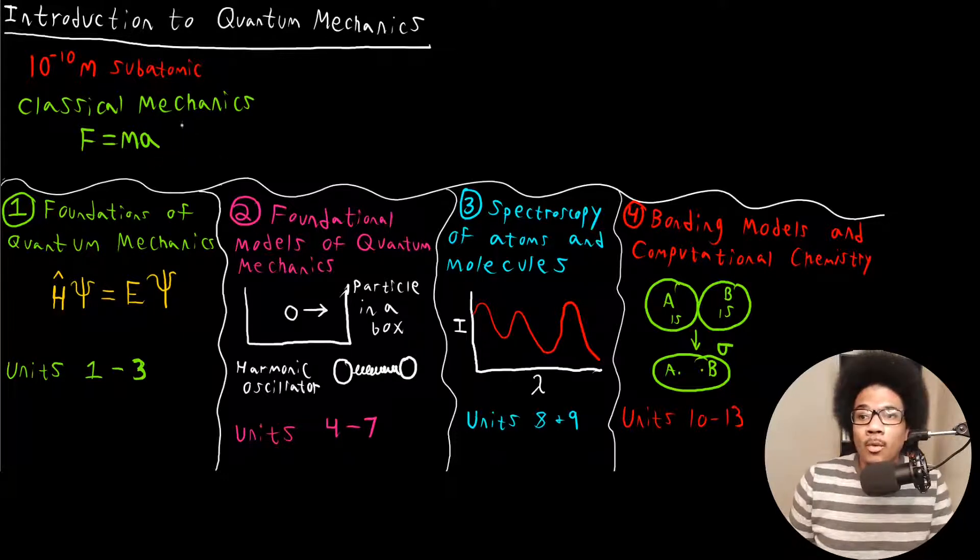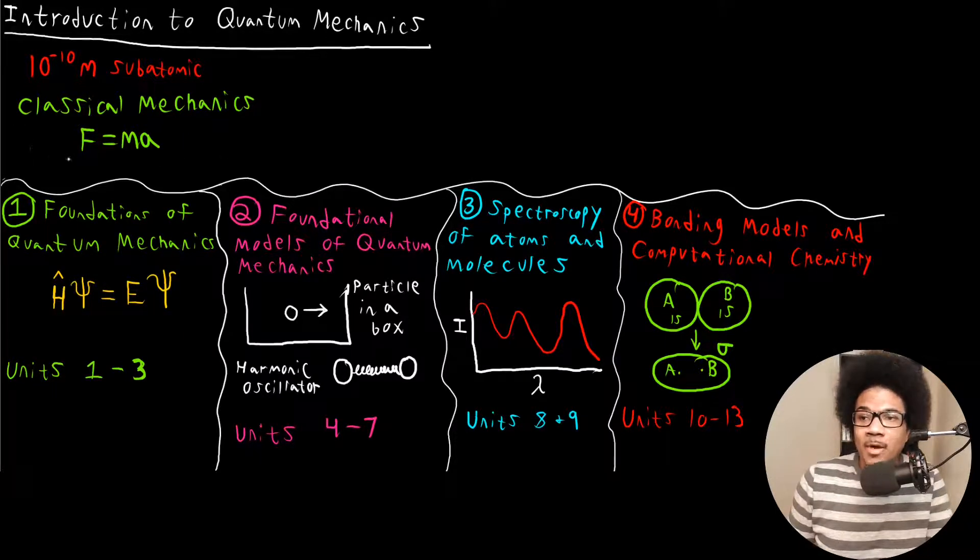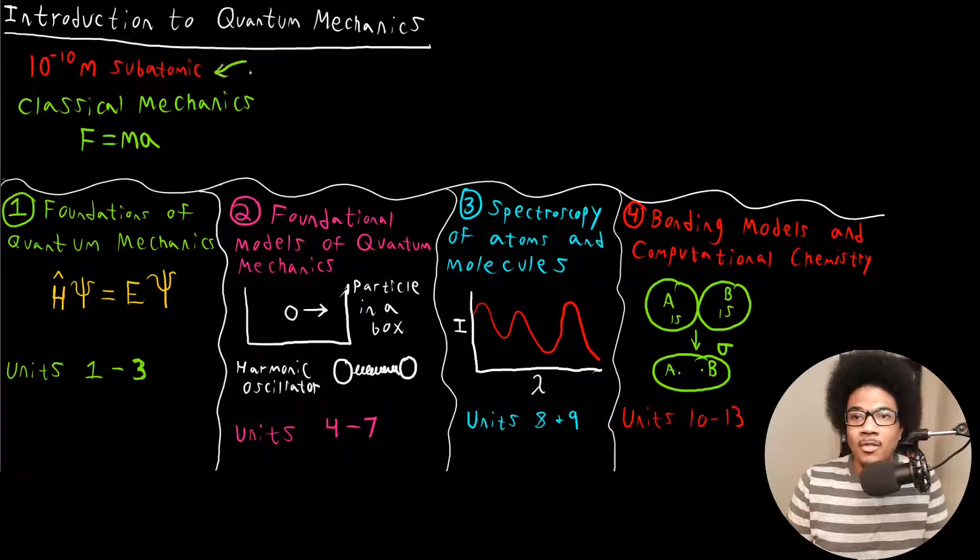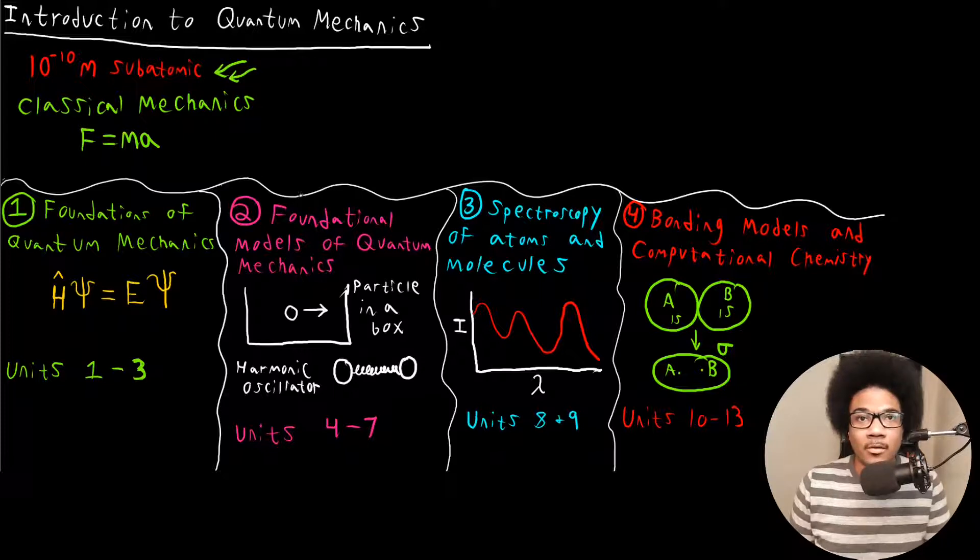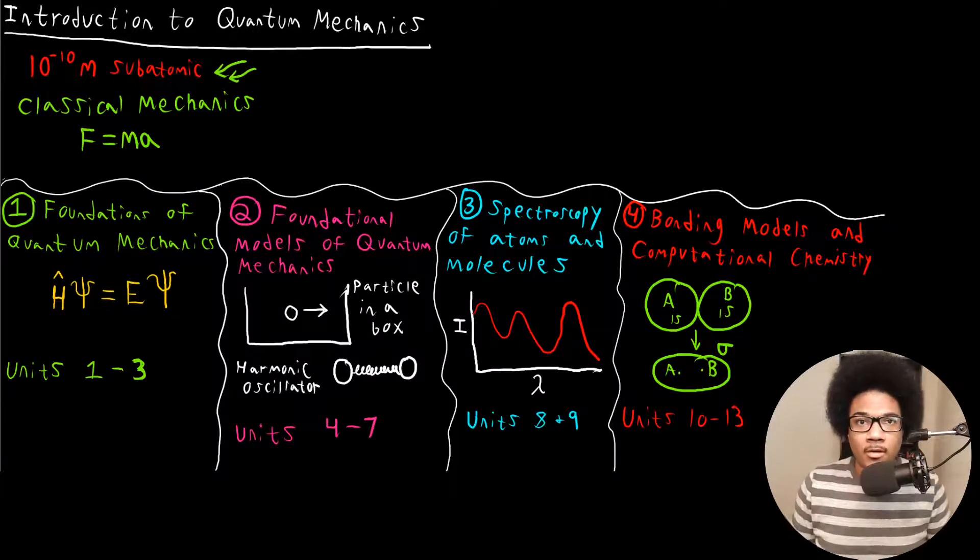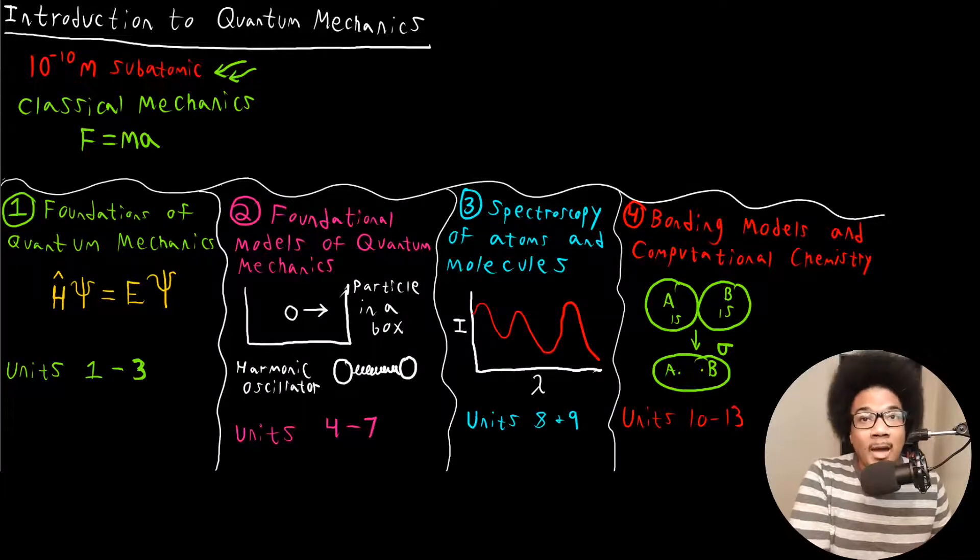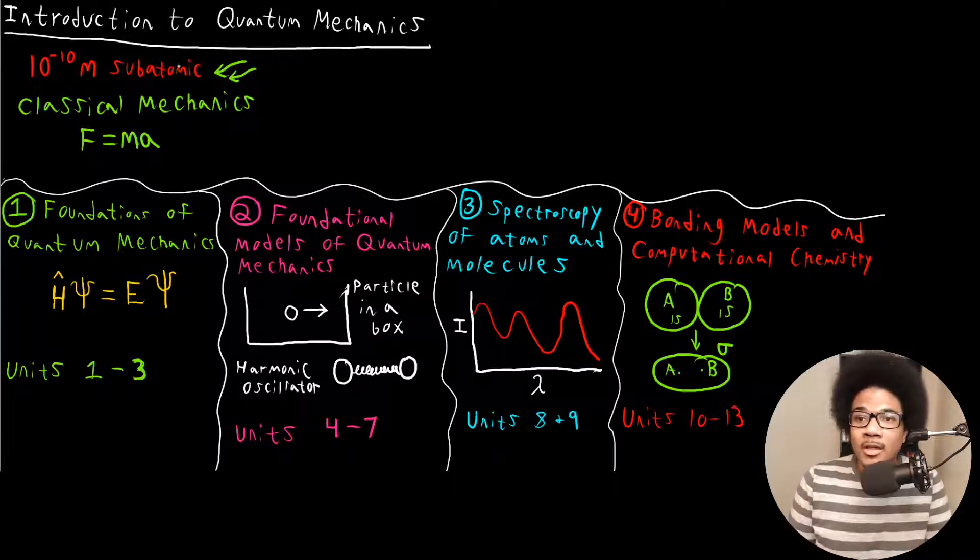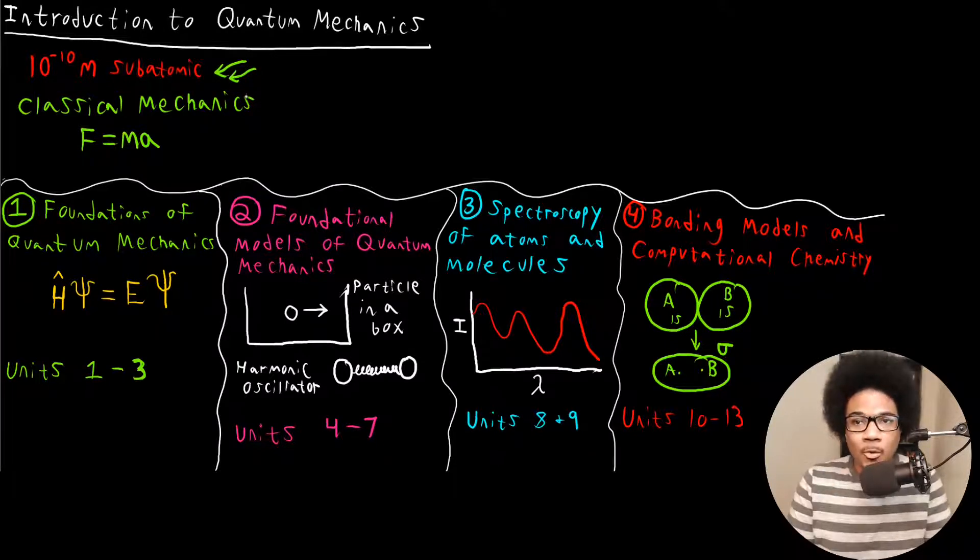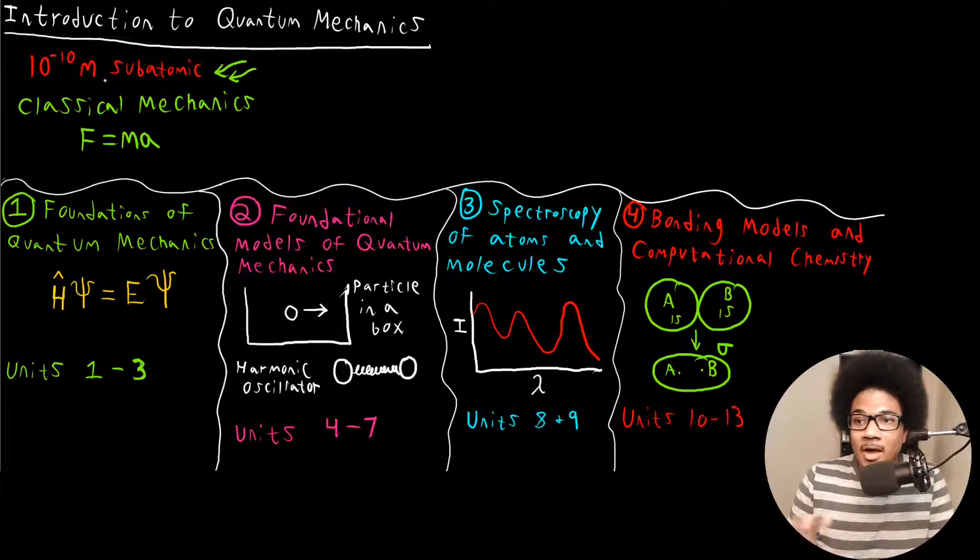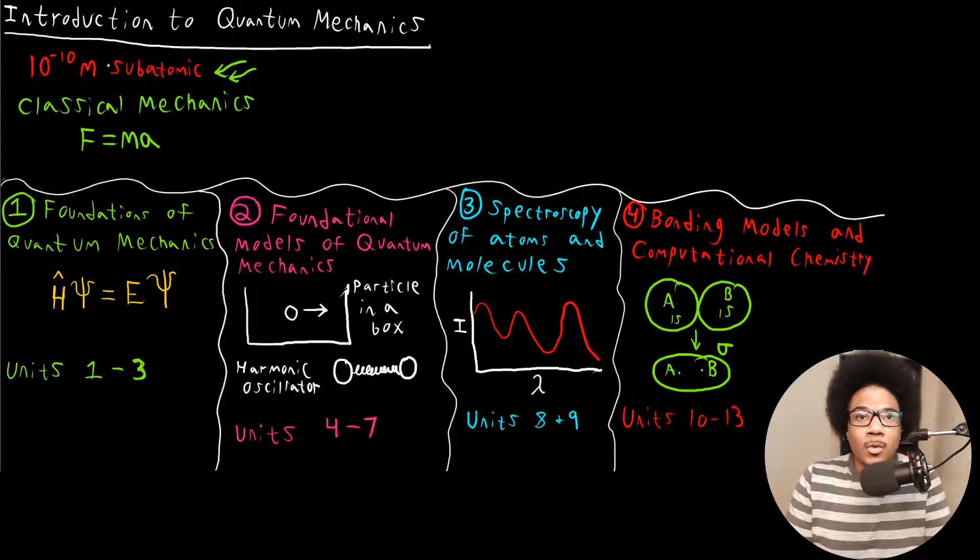Well, what happens when you try to apply classical mechanics to really small particles on this subatomic length scale is that it actually doesn't work, or at least it doesn't work as well as it does for larger objects. So when we get on the subatomic length scale, we actually need a new branch of physics that can describe particles that are moving really quickly and are at this really small length scale.